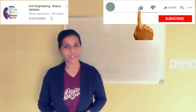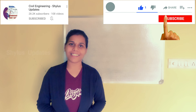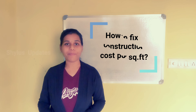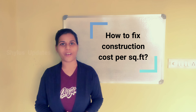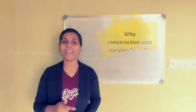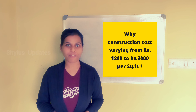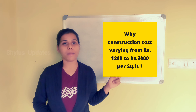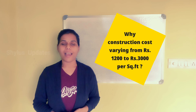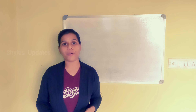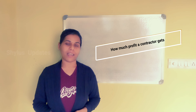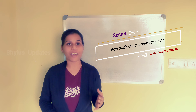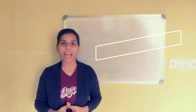Hello everyone, welcome back to my channel, Civil Engineering Shilu's Updates. Today we are going to see how to fix the construction cost per square feet, while the construction cost varying from Rs. 1200 to Rs. 3000 per square feet. And also, I will tell you one secret in this video — how much profit a contractor or an engineer would get while constructing a house.